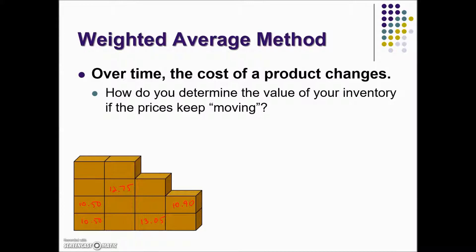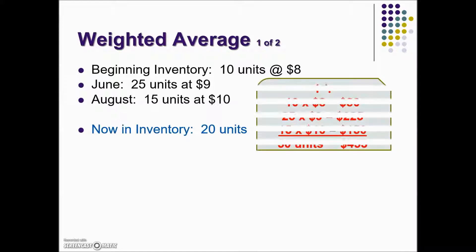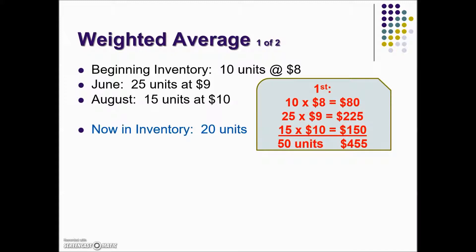The weighted average, or average cost of inventory, involves finding the average cost of an item and then multiplying the number of items remaining by the average cost in the inventory. So here we have a beginning inventory. In June some more were purchased, and in August additional units were purchased, and now there are 20 units in inventory. We first need to find the total of all the costs and all the units purchased.